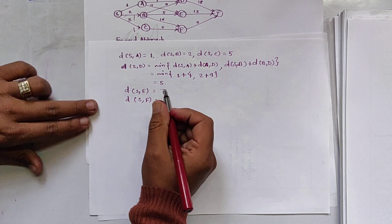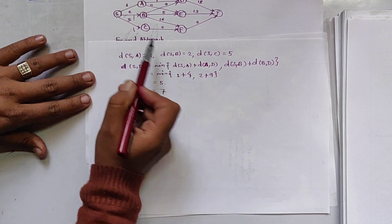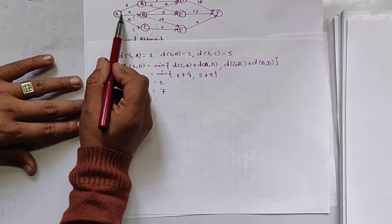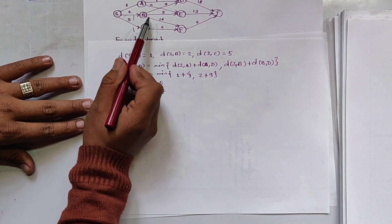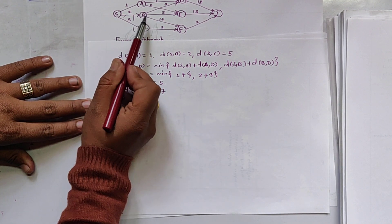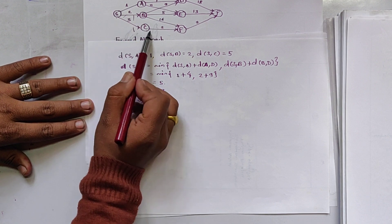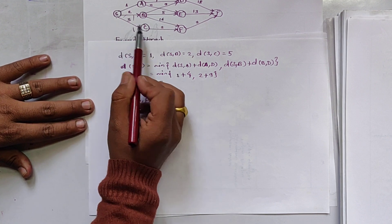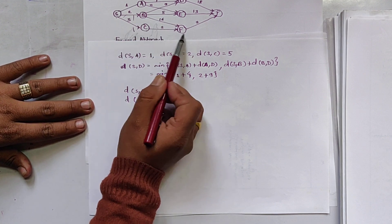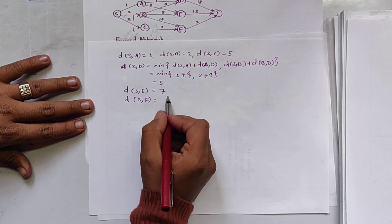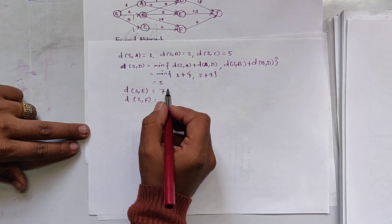For d(s,f), we consider d(s,b) + d(b,f) or d(s,c) + d(c,f). The minimum value between the two is 7.